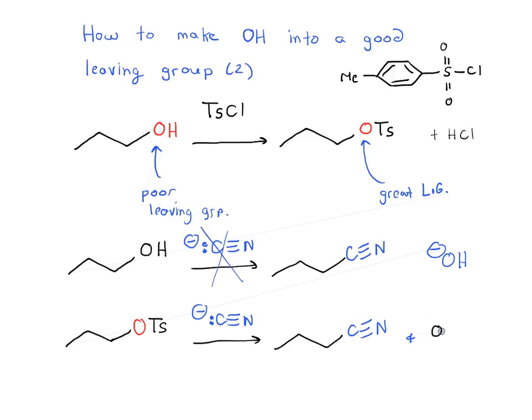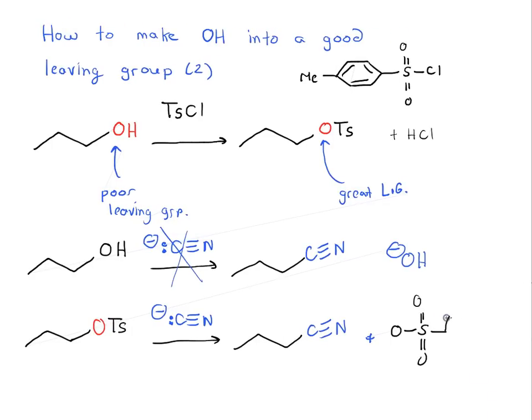And it's worth drawing this out, just to show why it is a good leaving group. So, it looks like this. We've got an aromatic ring, six-membered ring, aromatic, and there's a CH3 negative charge on the oxygen. So, this oxygen that is attached to the sulfur is very resonance stabilized. It can distribute this negative charge through both of these oxygens. So, for that reason, the tosylate ion is a very, very good leaving group.